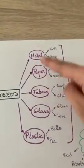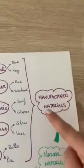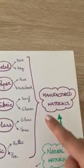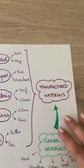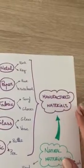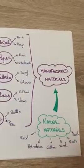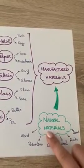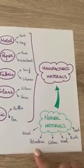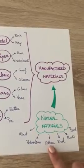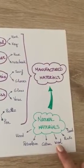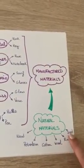All these materials are manufactured materials. This means they are made from other materials that we call natural materials. Some of these natural materials are wood, petroleum, cotton, wool, rocks, or sand.